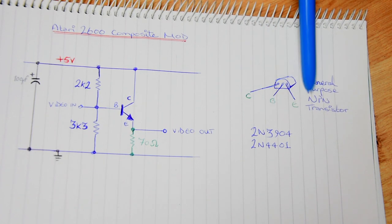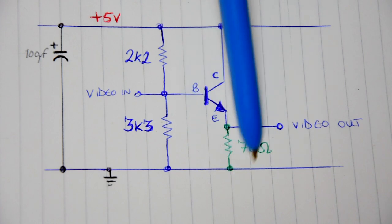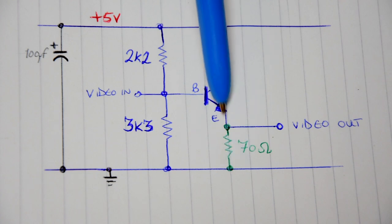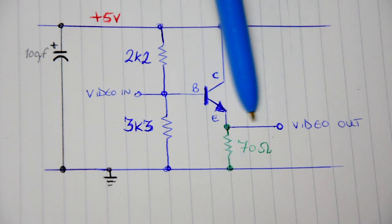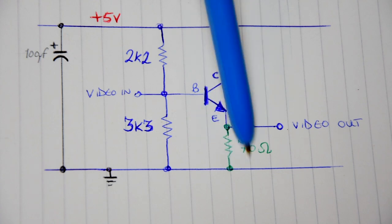So this resistor here, it's optional. I've added it here. The original circuit just did not have it there. However, I've read that if your composite signal is just way too bright, you can add a 70 ohm resistor here, which I have done.